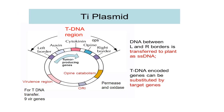Structure of the Ti plasmid: the Ti plasmid has a variety of genes. There is the ORI region for origin of replication, mainly used for replication. There is the virulence gene region, mainly responsible for the transfer of the T-DNA. There are nine different vir genes present in the Ti plasmid.